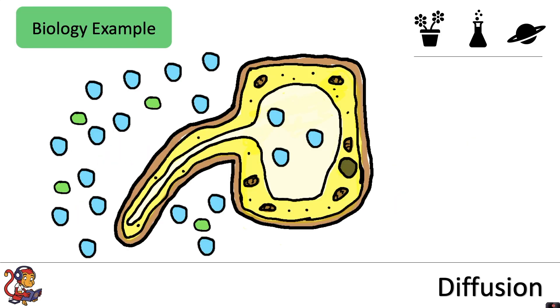There are lots of examples of diffusion in biology as well as chemistry. Here we have a root hair cell. Inside the cell, there is a low concentration of water. And outside of the cell, there is a high concentration of water in the soil. Water molecules will move by diffusion from a high concentration to a low concentration inside.